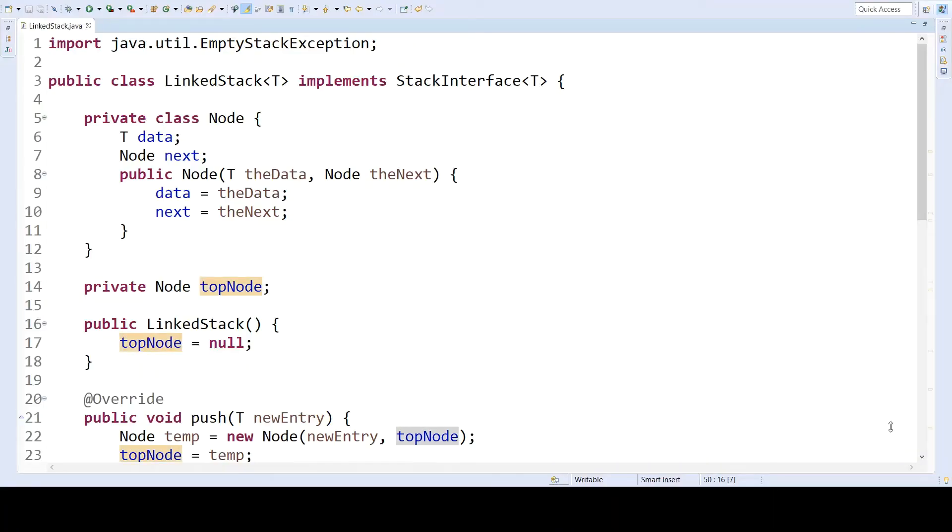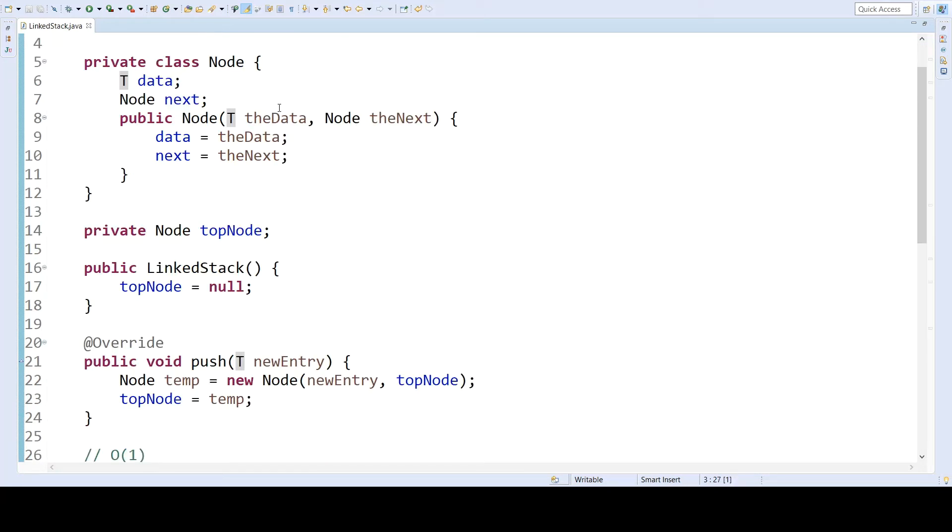And now we will discuss the Java implementation of this concept. So notice first that we have a private inner class named node. So this is a class, but it is only visible inside of the link stack. Notice that we have a link stack which has elements of type T. The two member variables of the node are data and next. So data can be some arbitrary type, and next is another node.